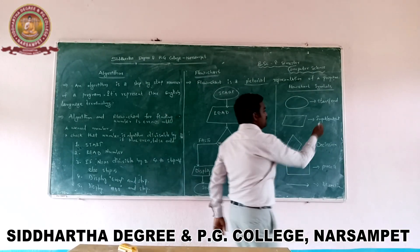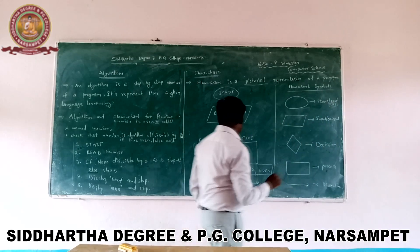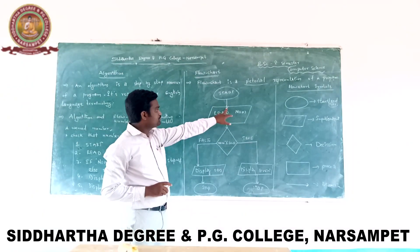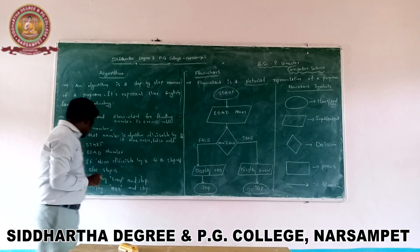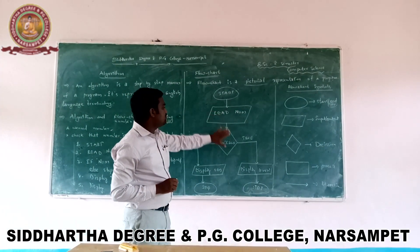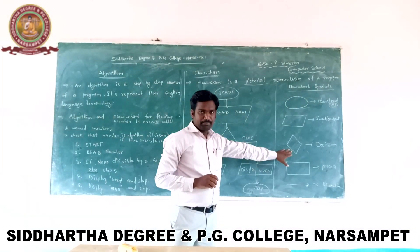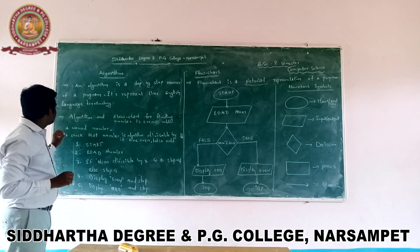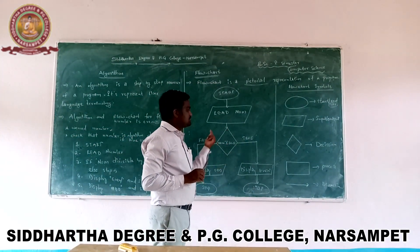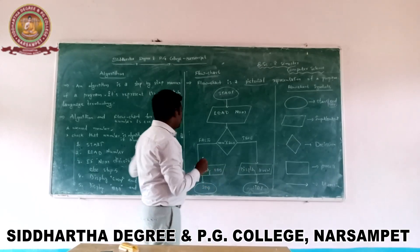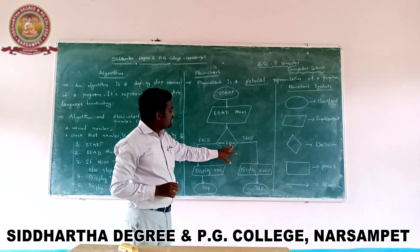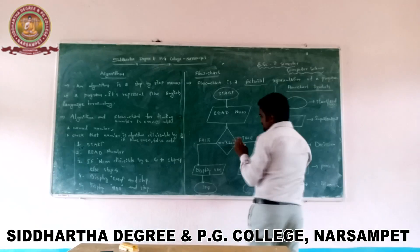Second step: Read number — represented by a Parallelogram. After reading the number, we go to the Decision step. The decision is: is the number divisible by 2 (remainder equal to 0)? The decision is represented by a Rhombus. This decision has two directions: true and false.